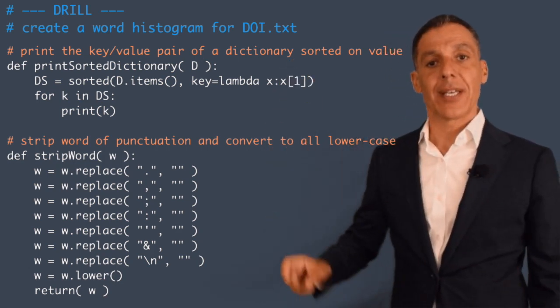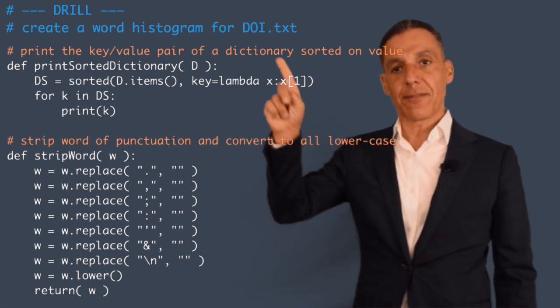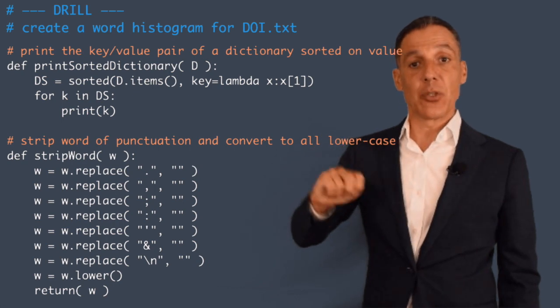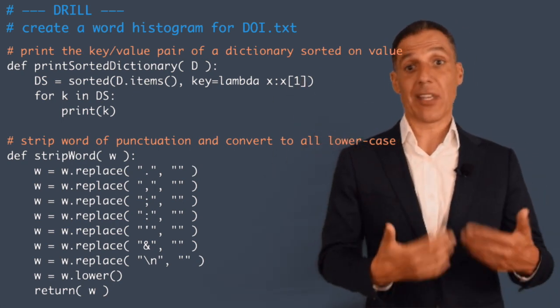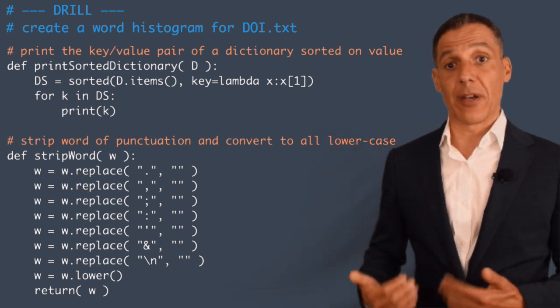So for every word inside of that file doi, you should tell me how many times it appears. Some will appear a lot, words like 'the', and other words will appear very little.